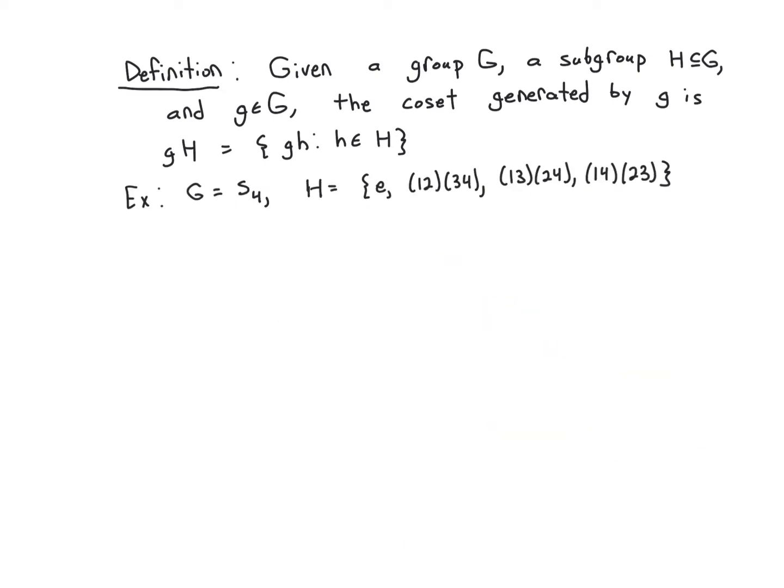So as a first example, let g be the symmetric group on four numbers, the first four positive integers, and let h be this subgroup. So this is a subgroup. Yeah, you do have to prove that this is, in fact, a subgroup.